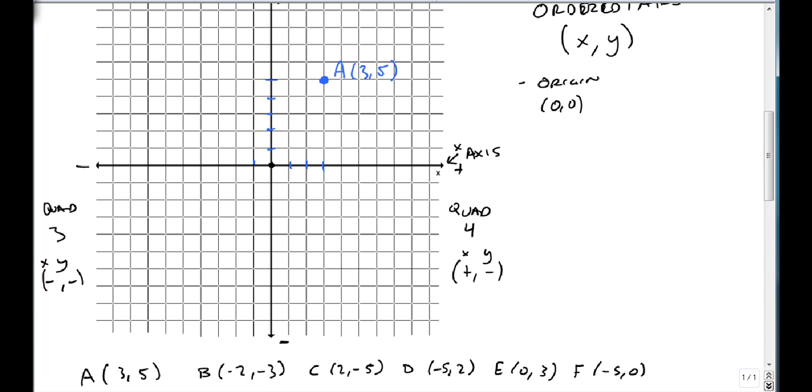(-2, -3). First we go -2 in x, then down -3 in y. Here's B at (-2, -3). So we've plotted B now.